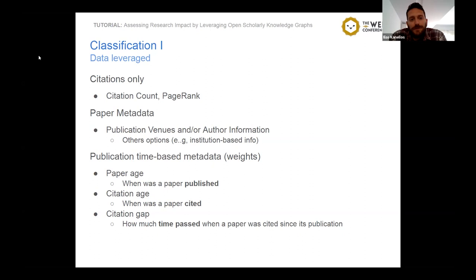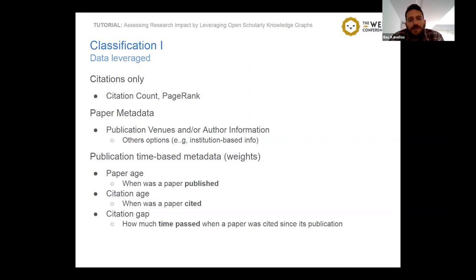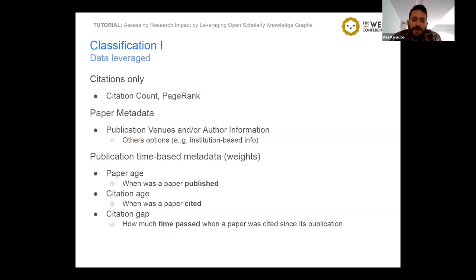We have methods that only depend on citations, such as the traditional metrics we already saw. Then we have methods that apply calculations using paper metadata concerning venues, authors, publication topics, or institutions. Another important type of data are time-based weights that concern paper age, citation age — when a paper was cited — or the citation gap, which quantifies how much time passed from a paper's publication until its citation. The other axis for classification concerns their underlying computational model: modifications of citation counts, modifications of PageRank-based models, analysis on heterogeneous networks, ensemble methods, and others.